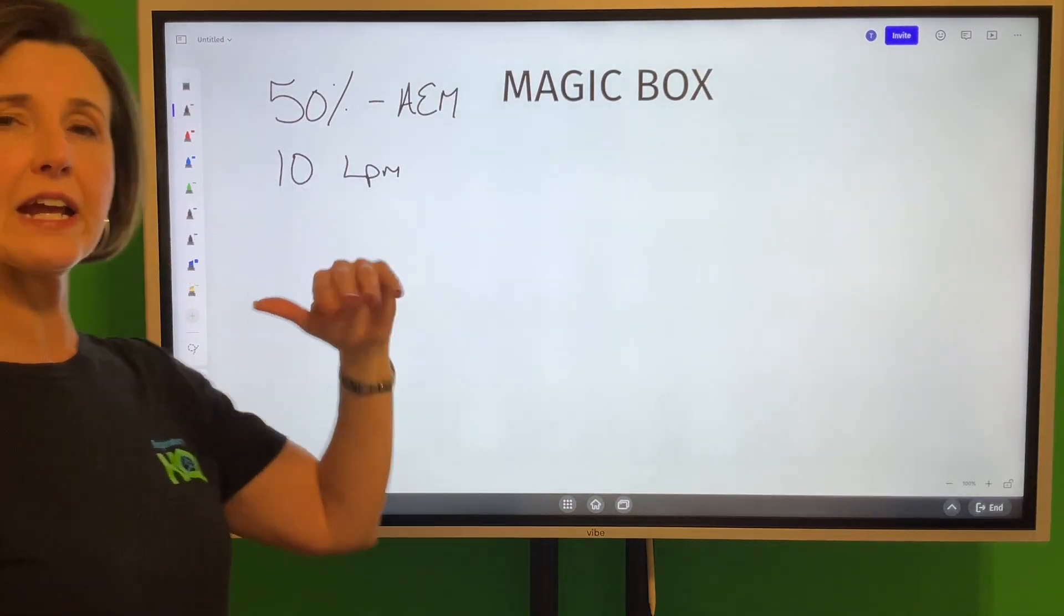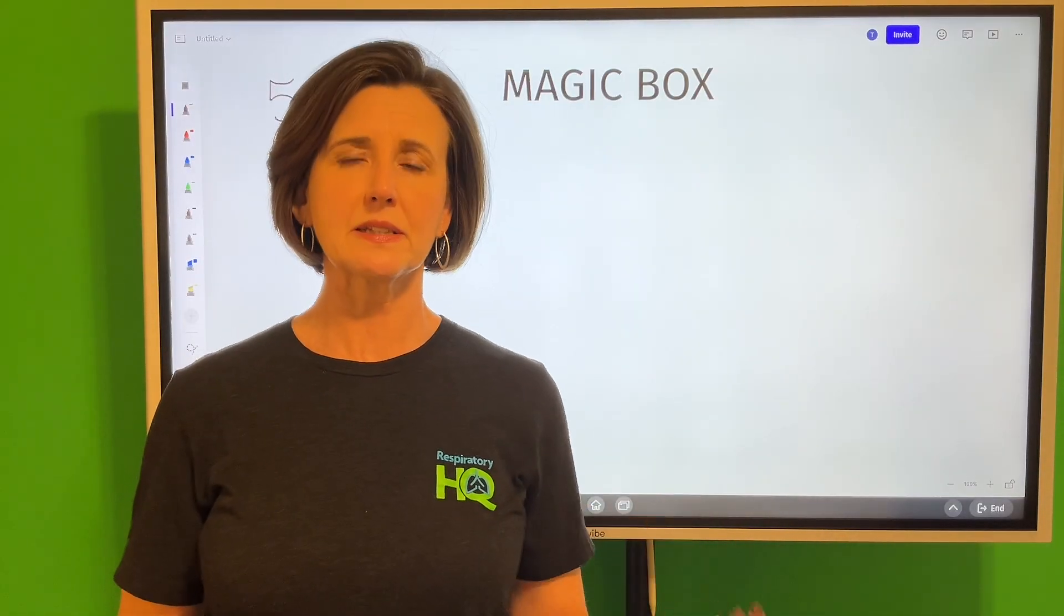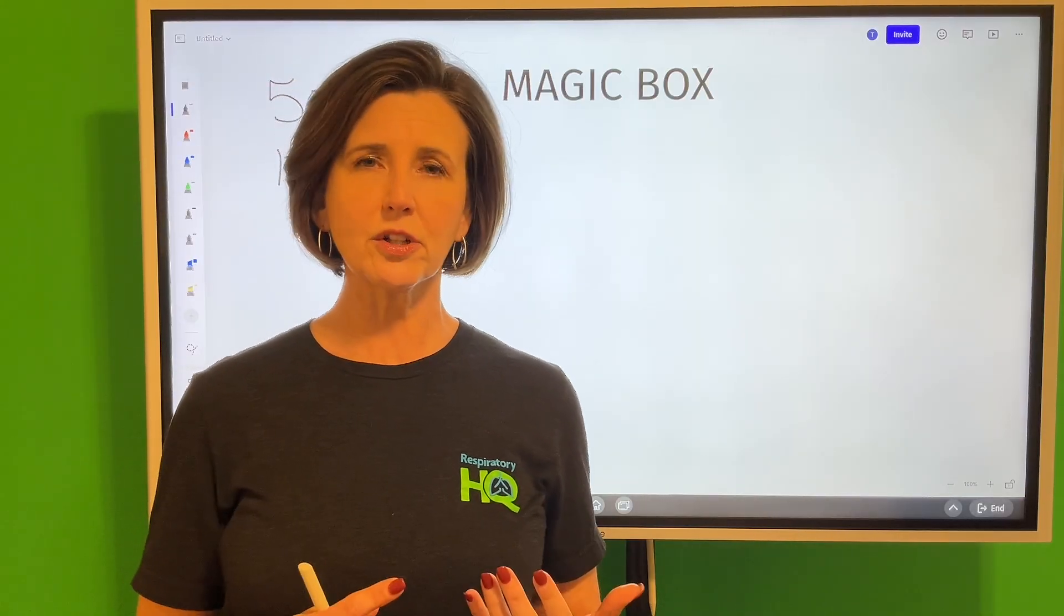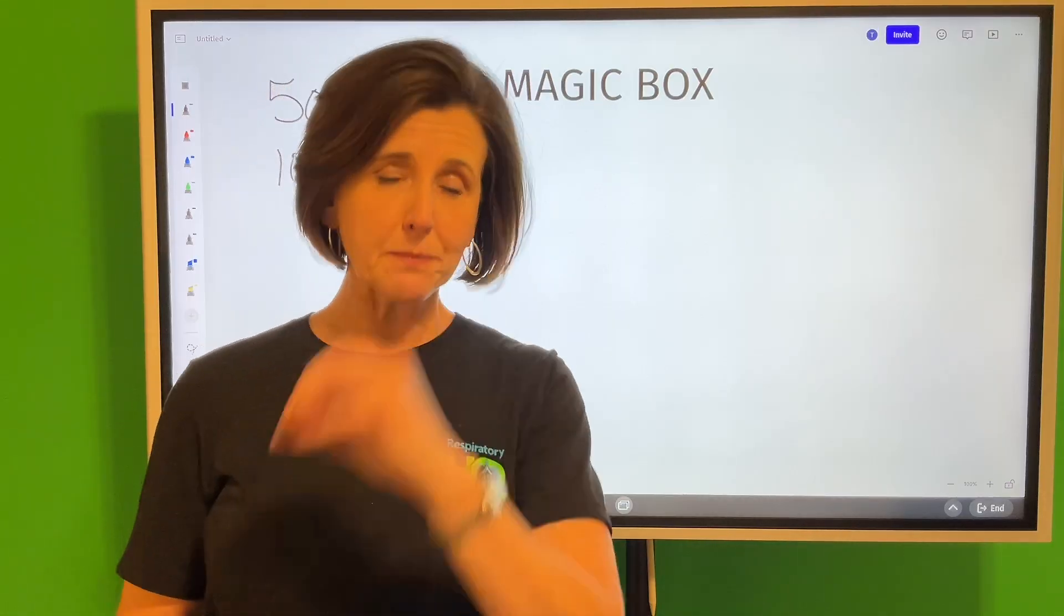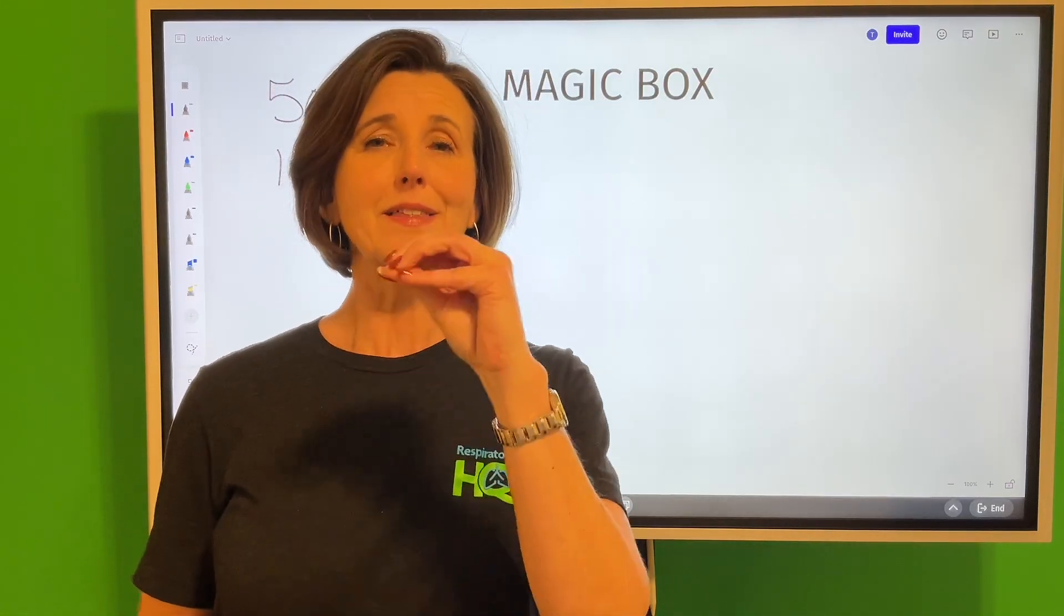Okay, so we're going to do it with a scenario. We've got a 50% air entrainment mask. Now just a little bit of a review, when we're dealing with air entrainment systems like a Venturi mask or anything that hooks up to a jet nebulizer, an aerosol mask, a face tent, a t-bar, a trach collar, all of those are air entrainment systems. The magic box is applicable with that system.